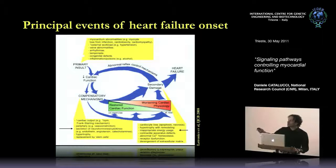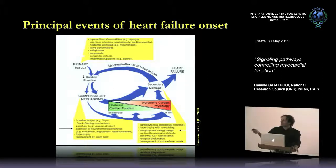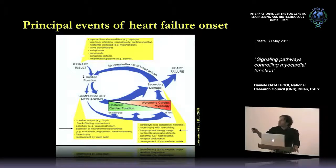But if the insult continues and the compensation is not effective, we have a maladaptive compensation that can get worse and worse, leading to several abnormalities in the heart — both at the energy level and calcium homeostasis — that eventually lead to secondary damage and ultimately heart failure leading to death.